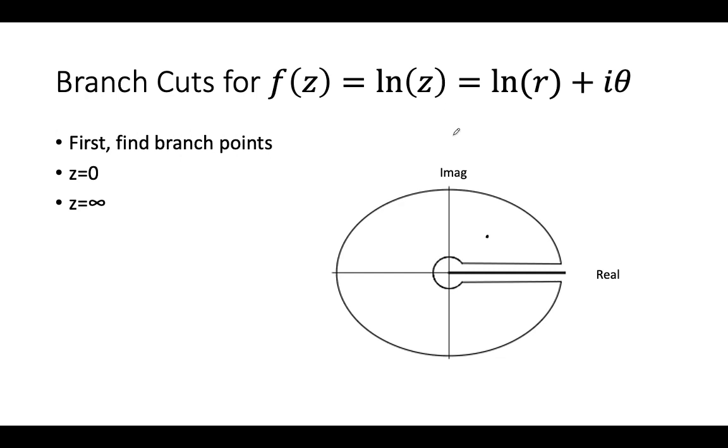Since that's a branch point, we have two branch points here and here. You want to make it so you can't go around any of them, because in this case, if you go around two branch points, you're not going to cancel out. So we have a branch cut between 0 and infinity.